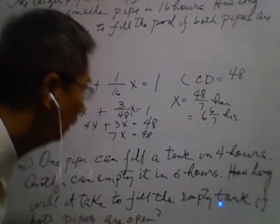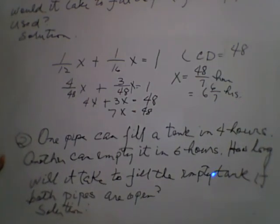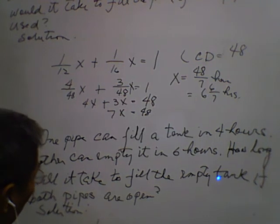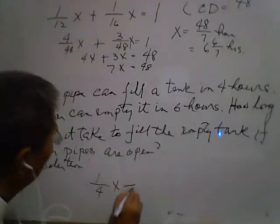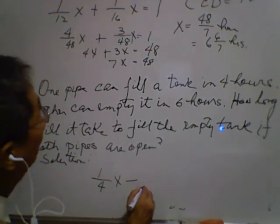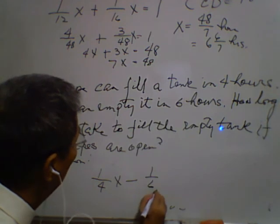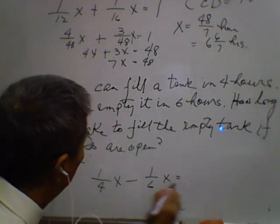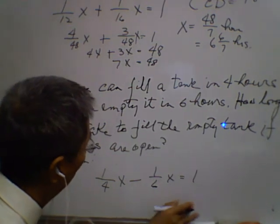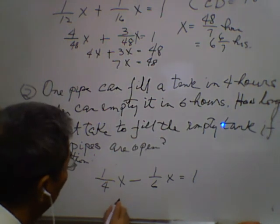For the solution, one pipe can fill, so that is 1 over 4 of the total number of hours, minus because the one is emptying the tank, so that is 1 over 6 of the function of the full part. Now the LCD is 12, so 6x minus 4x